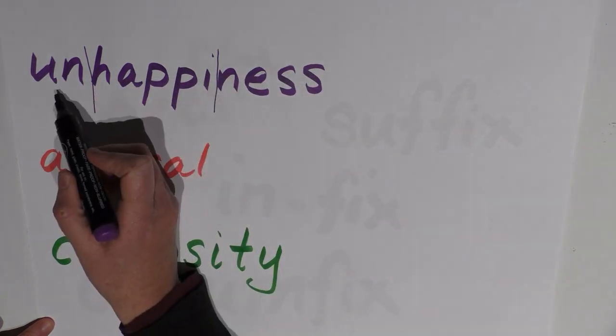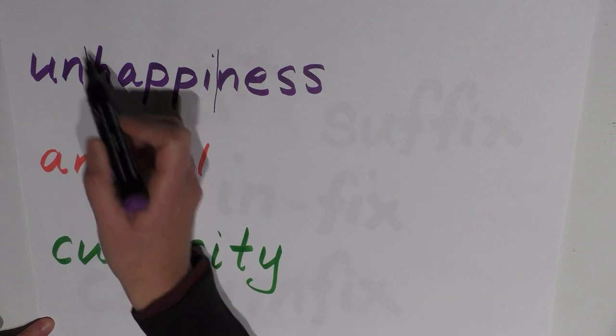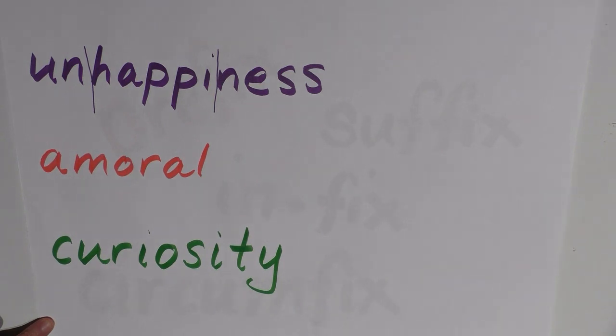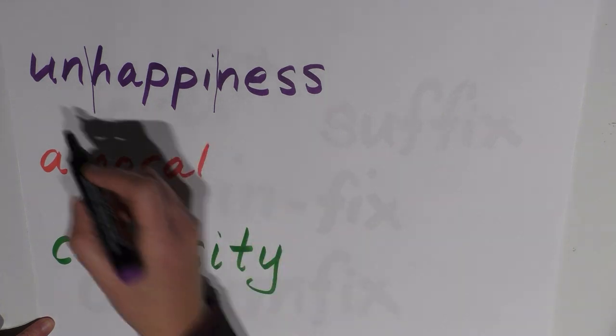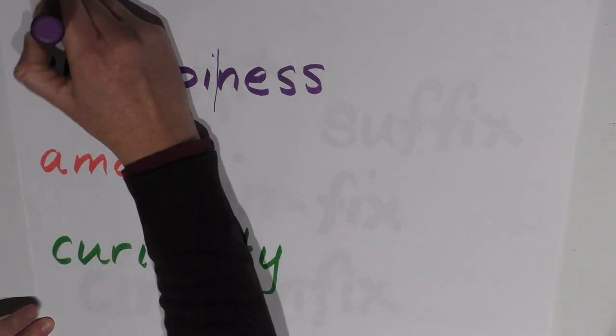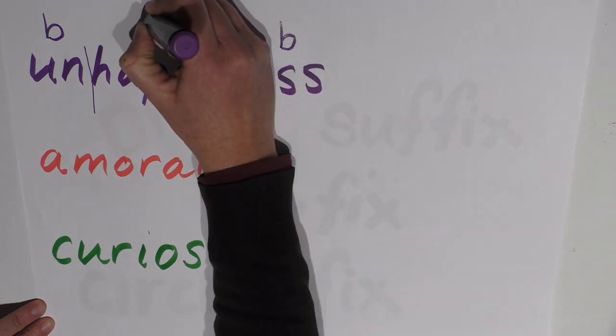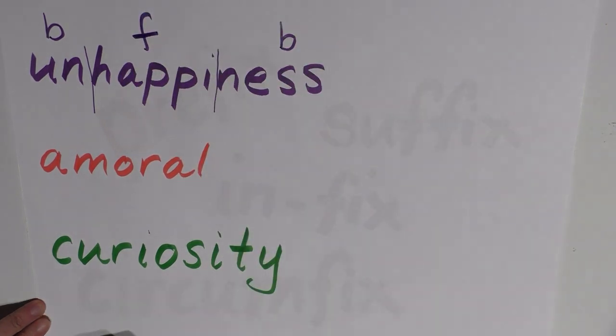'Un' is changing the meaning of the word; it's a derivational morpheme. And 'ness' is changing the form of the word, converting it from an adjective 'happy' to the noun 'happiness.' So we have two bound morphemes. This one is a bound morpheme, this one is a bound morpheme, and this one is a free morpheme. Three morphemes: bound, free, bound.